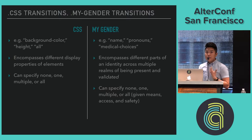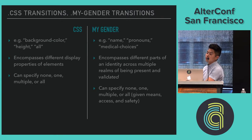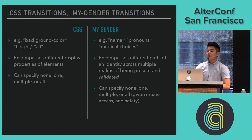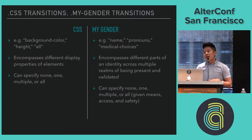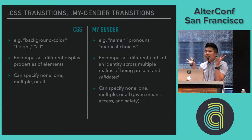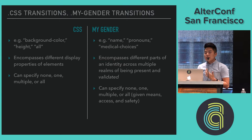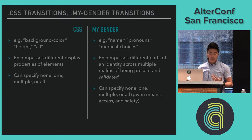The first argument you provide for a CSS transition is the specific property you want to apply — it could be height, background color, or you could apply the transition to everything about the element. For me, it's not quite as simple. The important thing to note is that transitions can take place over several aspects or none at all and still be valid.